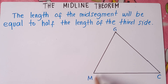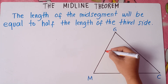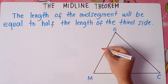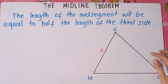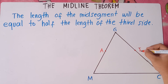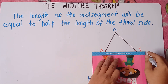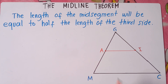This is triangle MGC. If we get the midpoint of line MG — this is line MG — we label that midpoint as point A. And we get the midpoint of line GC, labeling it as point I. If we connect the midpoints of MG and GC, we form the midsegment AI.